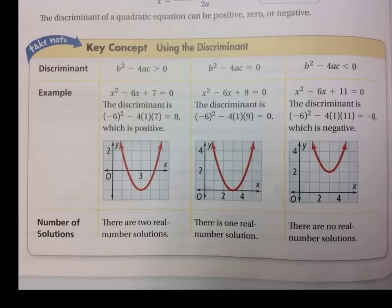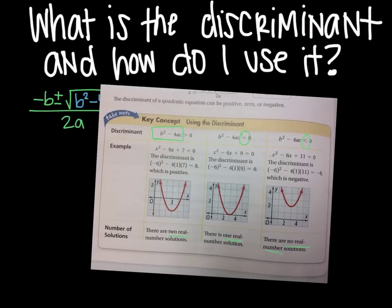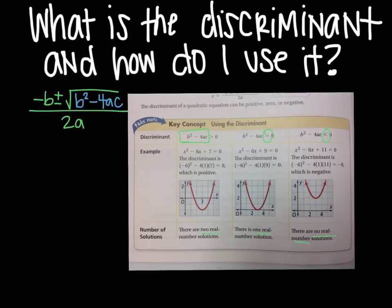Using the discriminant, if this is greater than 0, there's 2 real solutions. If the discriminant is equal to 0, there is 1 real solution. And then if it's less than 0, there are no real solutions. So that's a fast version to figure out how many possible solutions there are. And then you'll have to find those solutions, but at least you know how many you're looking for.